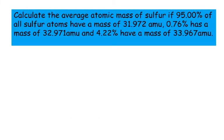Calculate the average atomic mass of sulfur if 95% of all sulfur atoms have a mass of 31.972 atomic mass units. 0.76% has a mass of 32.971 atomic mass units.